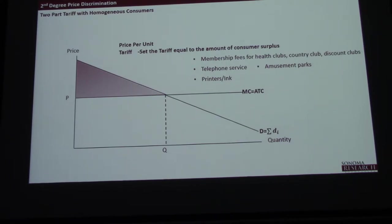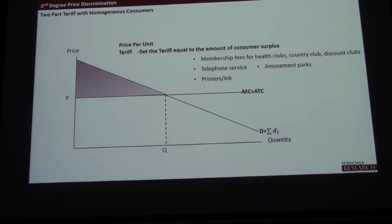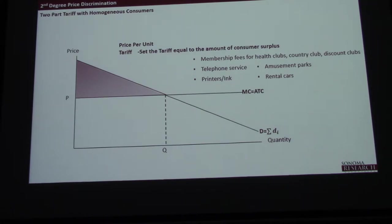Amusement parks — you pay one fee to get in. Old Disneyland: you paid a fee to get in, then you had tickets for the rides, and the tickets had letters like A, B, C, E — the more popular rides were more expensive. Now it's just a flat fee. Food at amusement parks and popcorn at movie theaters — they don't want to charge too much because people won't come. So it's kind of a combination price, a two-part tariff: they want you to come in, but they also want to make money off the concessions. Rental cars, mileage — pretty popular two-part tariffs.